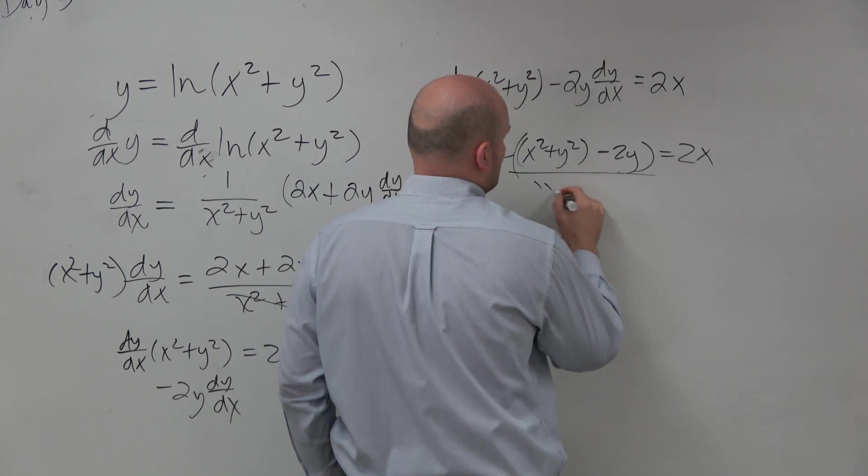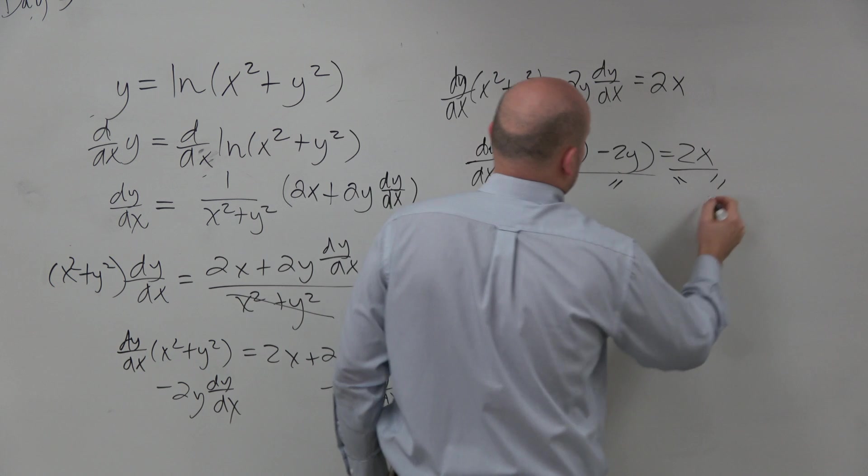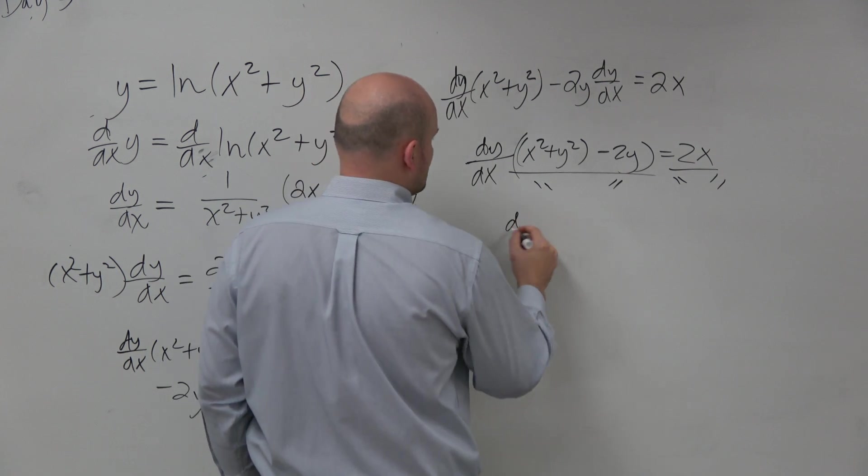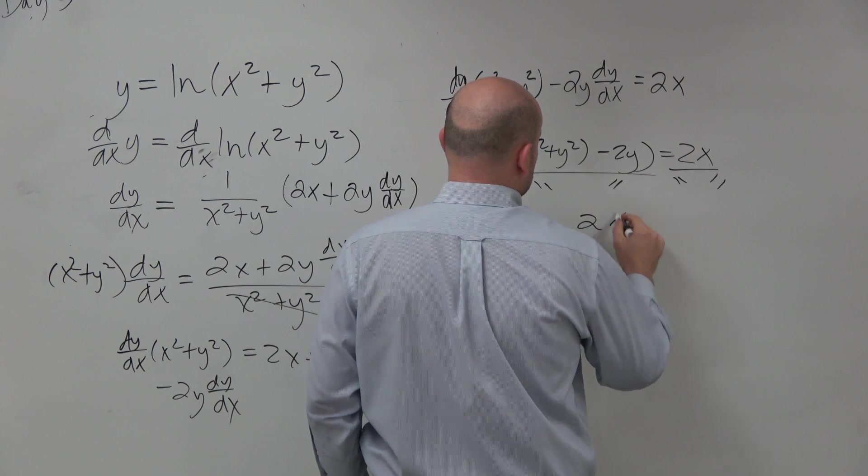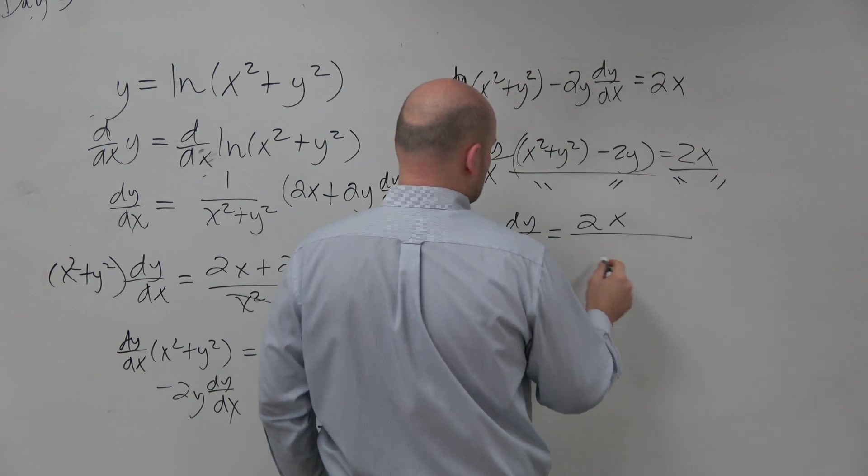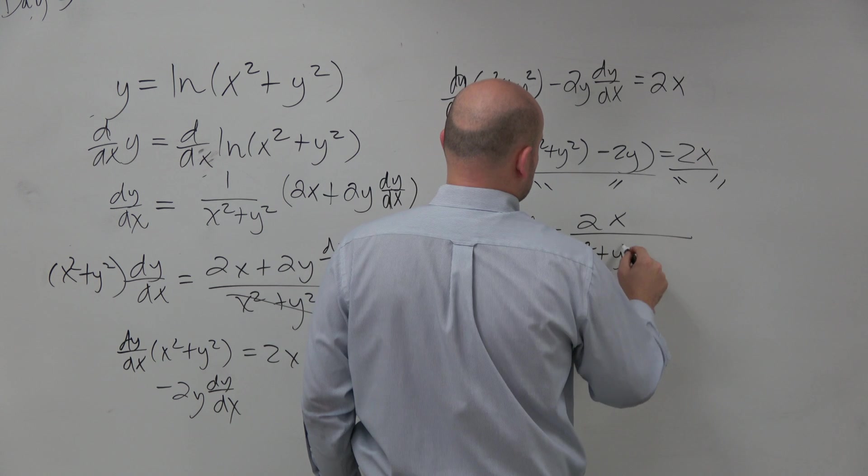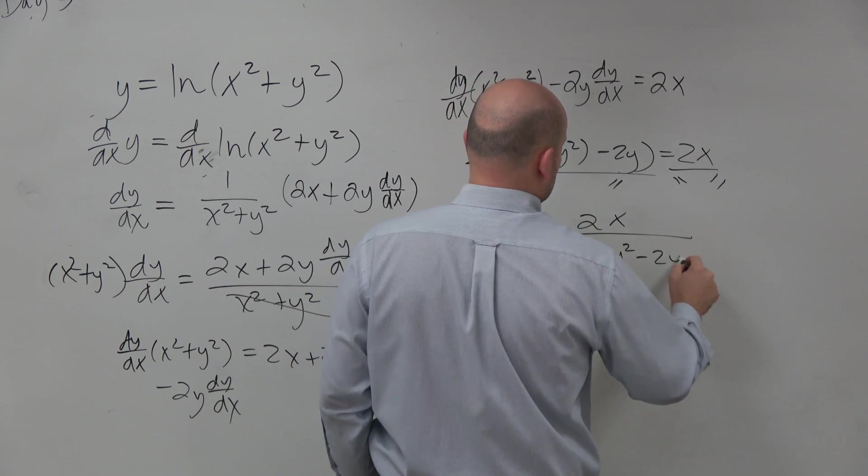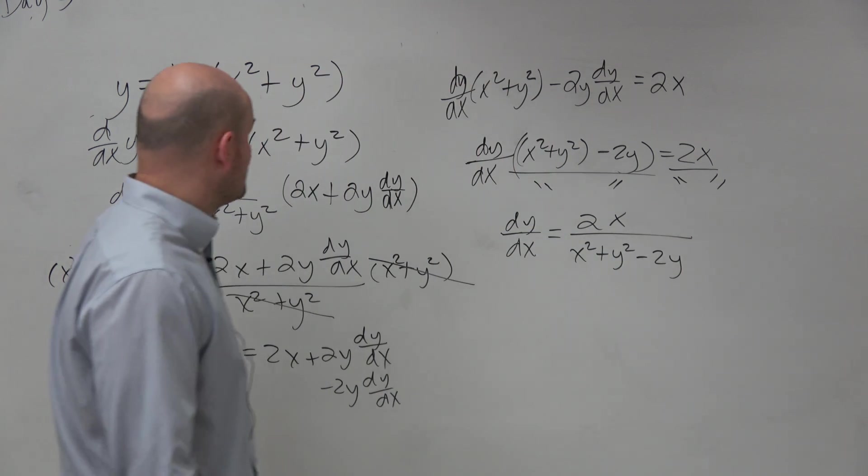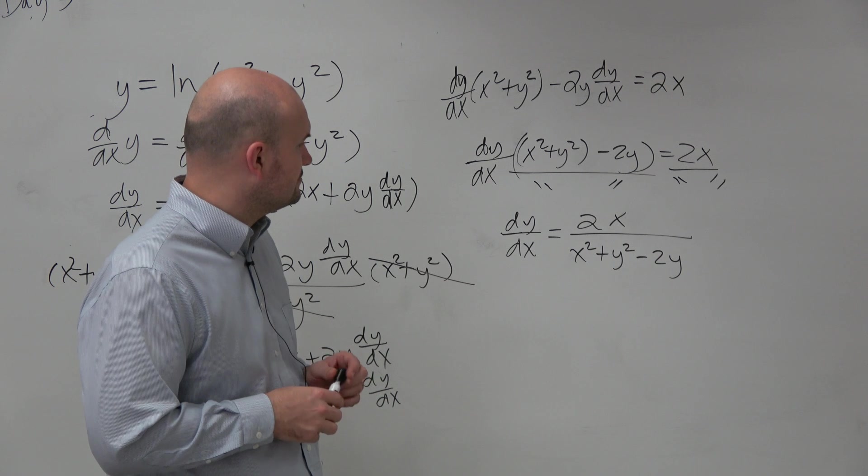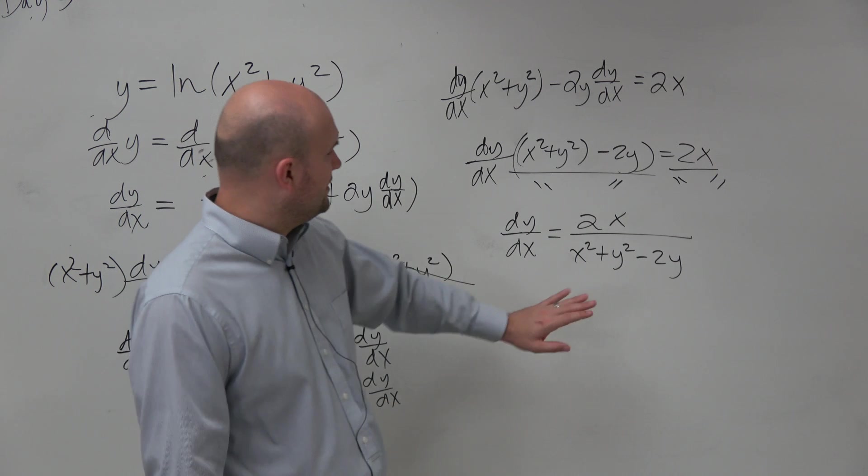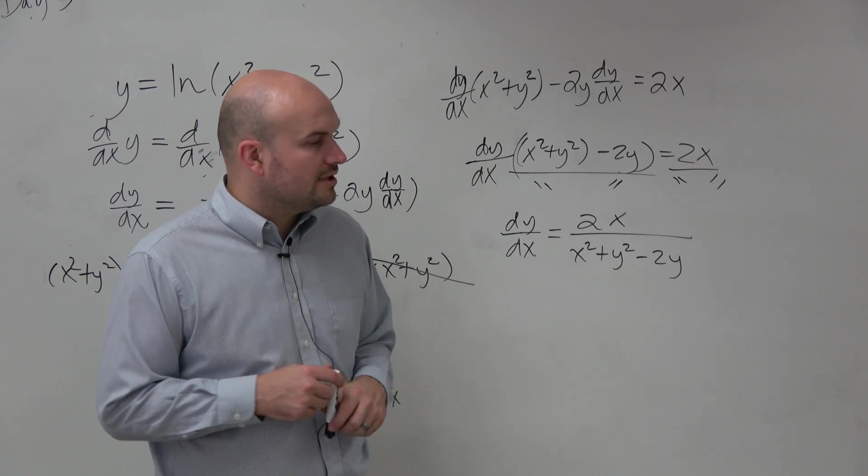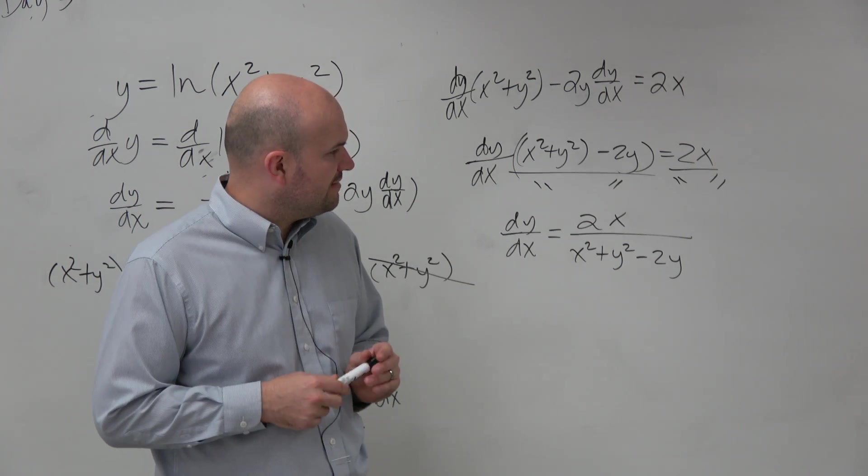Well, divide that on both sides. So dy dx is equal to 2x over x squared plus y squared minus 2y. Now, obviously, we could write it in there and just leave it in that form.